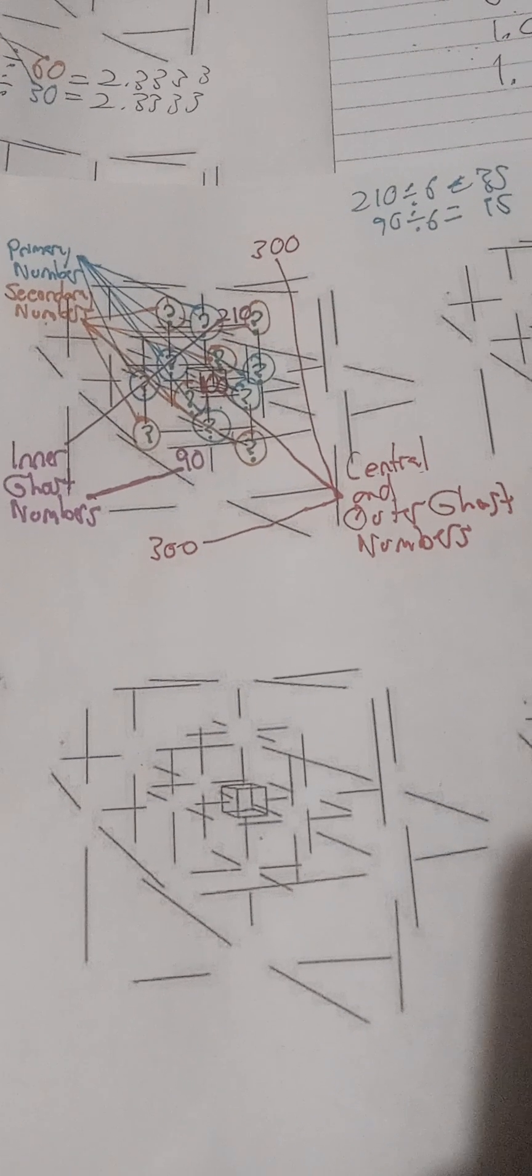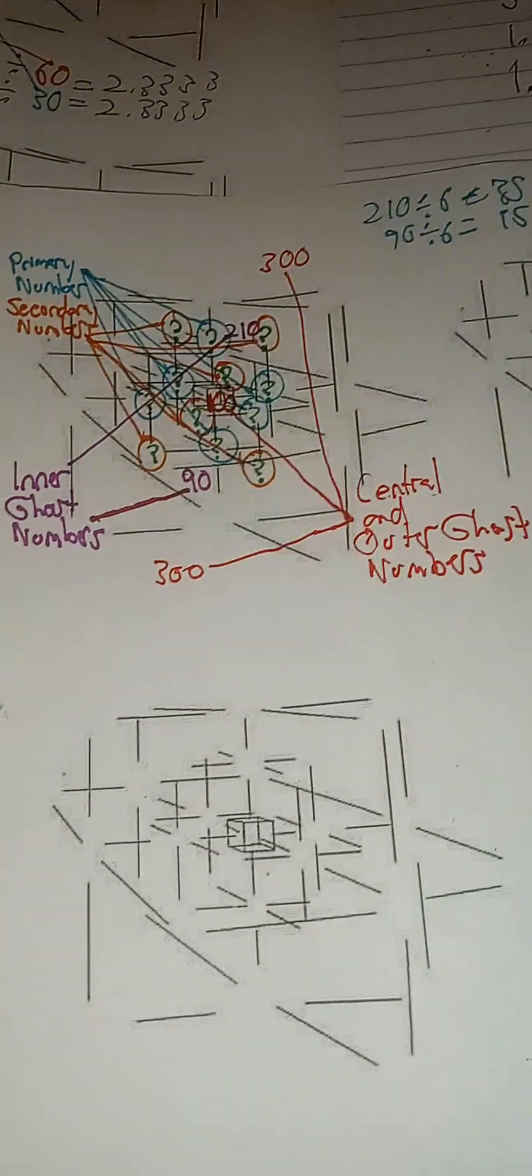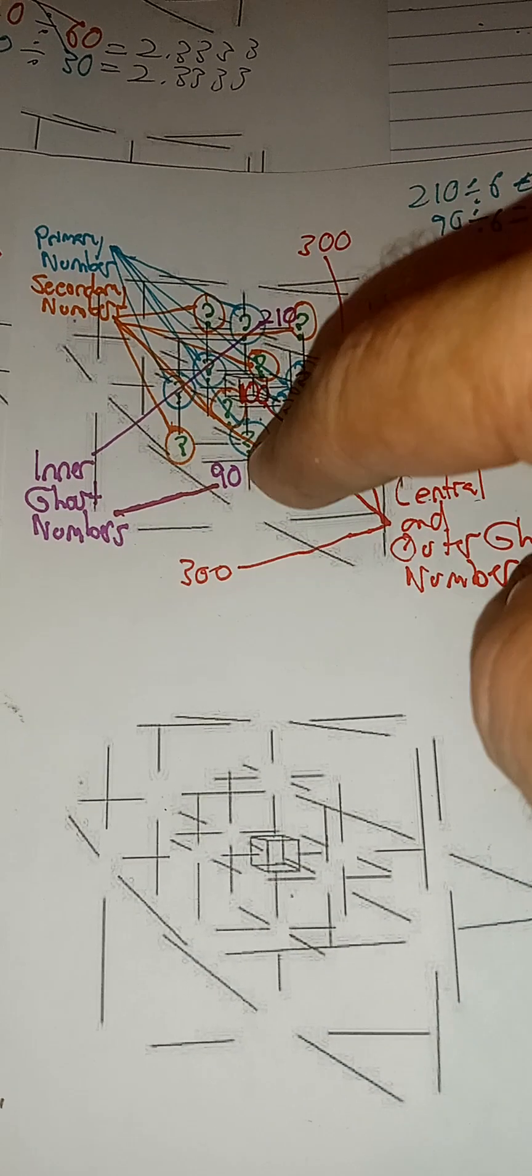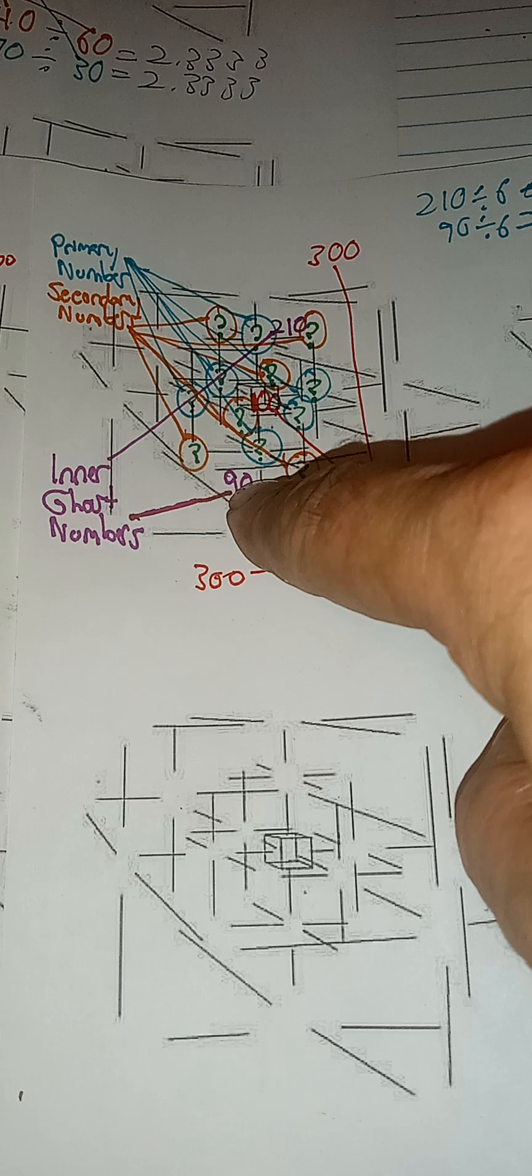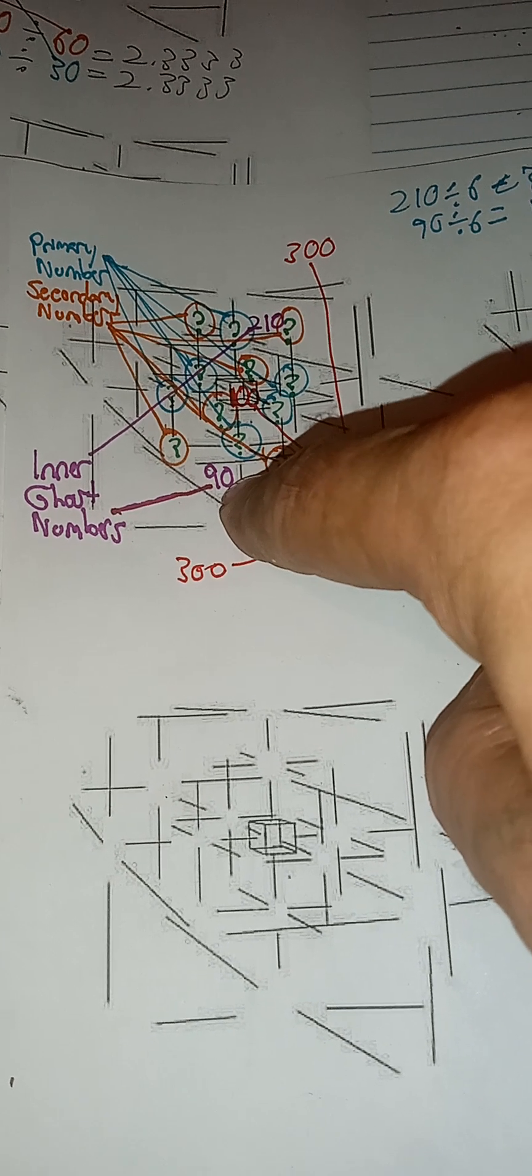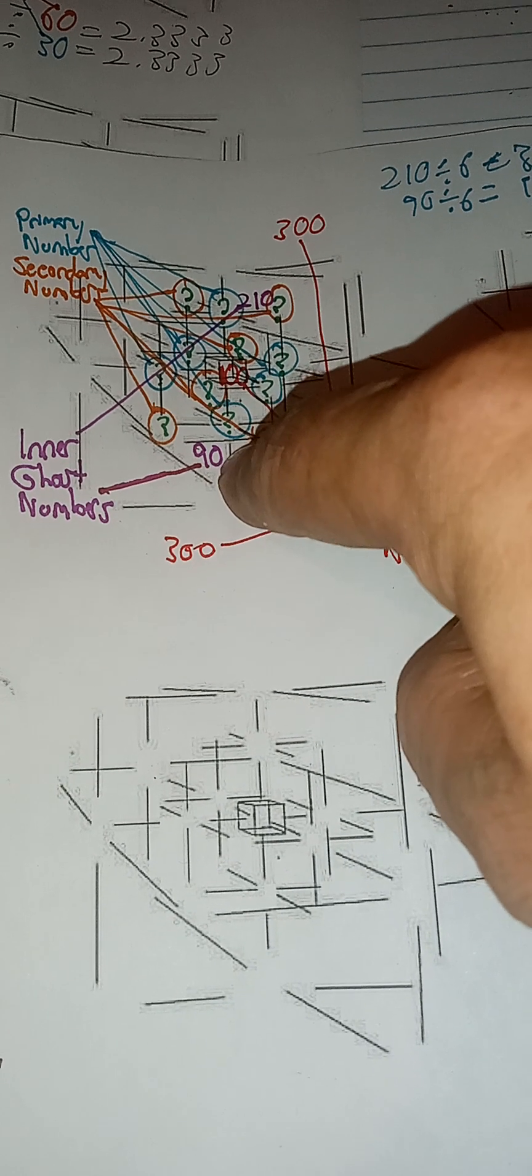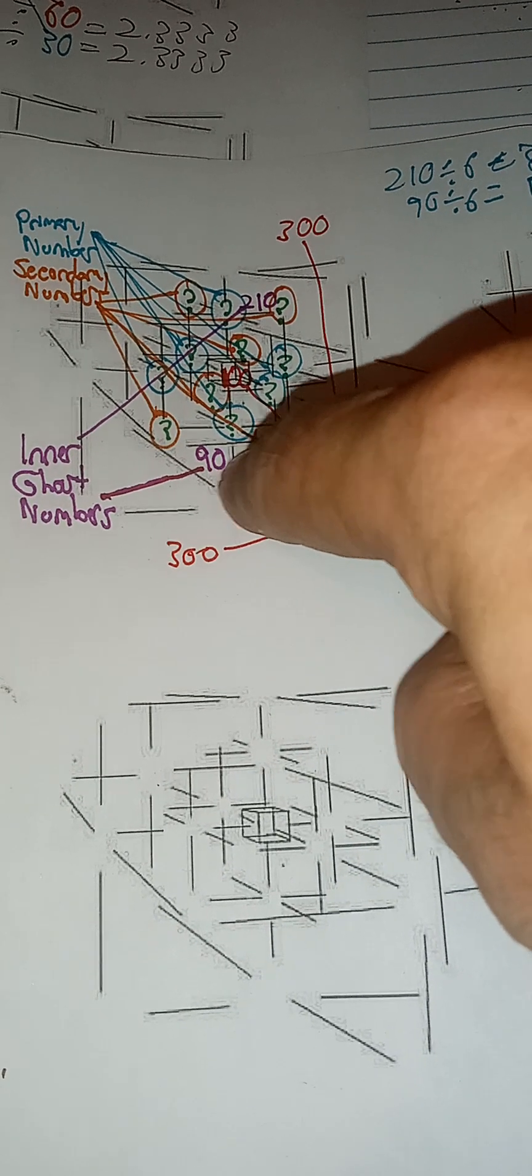I call this the inner ghost number conjecture, and what I mean by that is I believe that a system of equations, some sort of system of equations that has proportions to them.